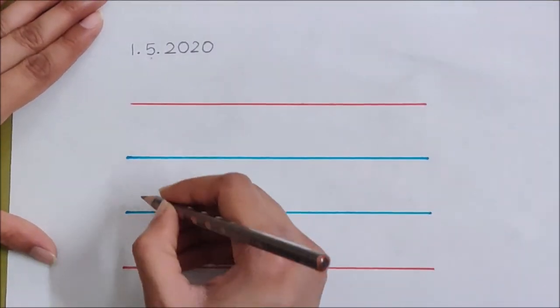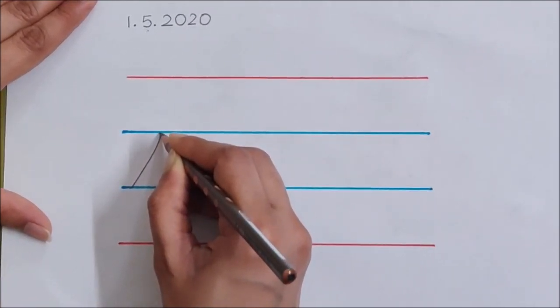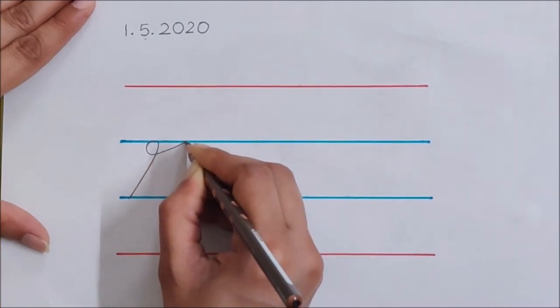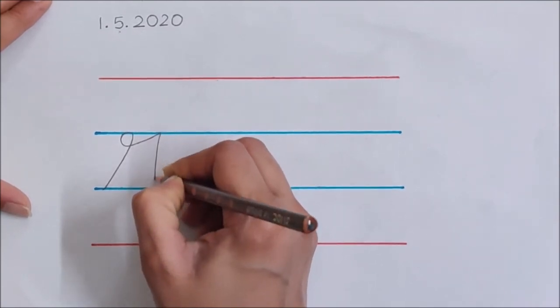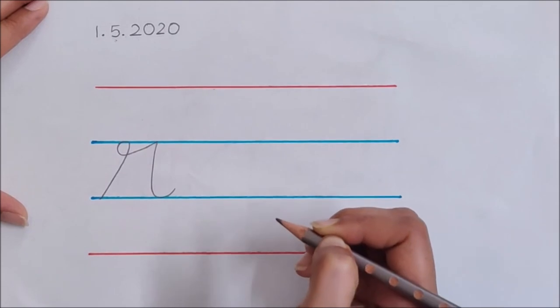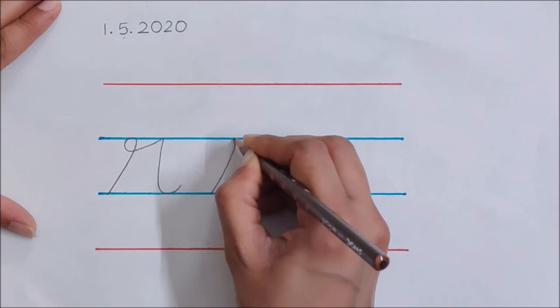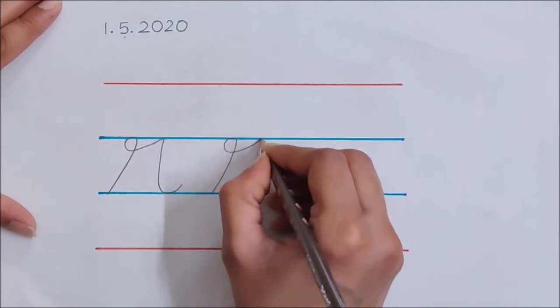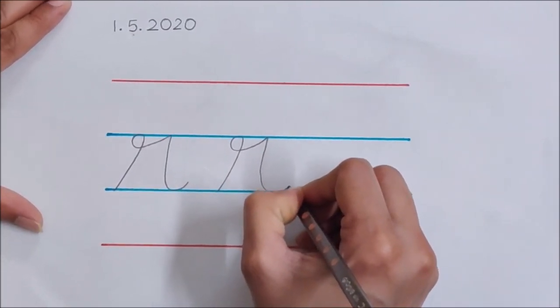Now let us write letter R. Now you have to start from the lower blue line, go up, touch the blue line, then a loop behind, again touch the blue line up, and then come down. Touch the blue line and little up.